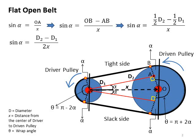There are a few terminologies discussed in the previous lecture: D1, the diameter of the driver pulley; D2, the diameter of the driven pulley; and the distance X, which is the distance from the center of the driver pulley to the center of the driven pulley. We also have angle theta, which is the wrap angle.